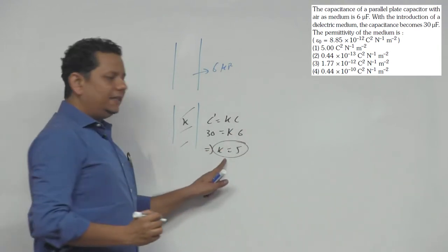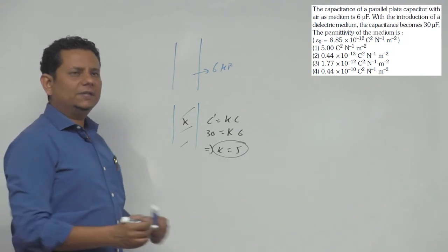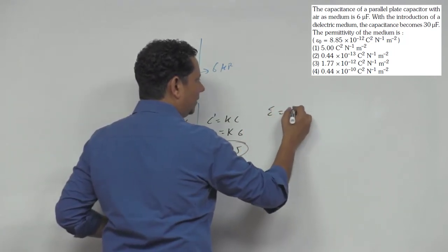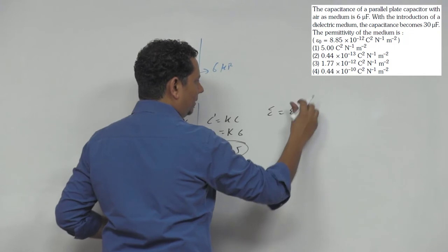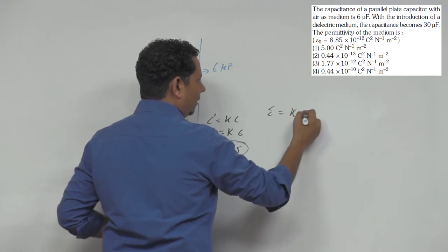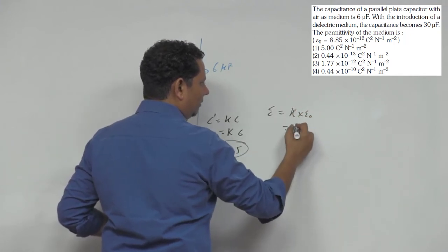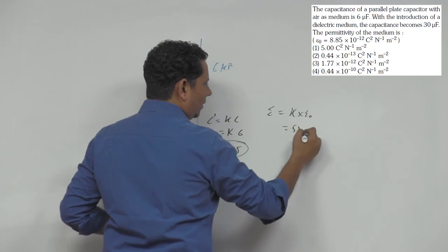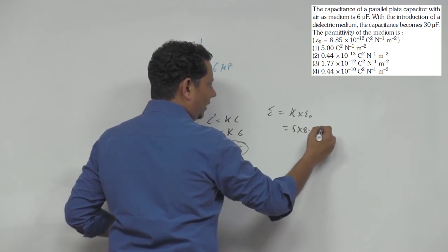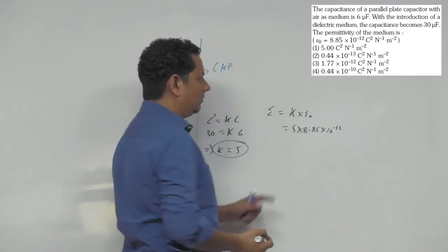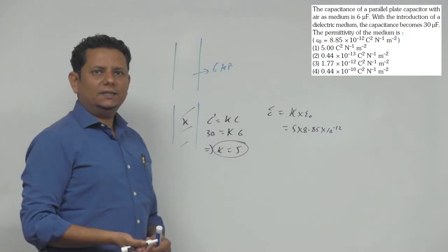Now यहां आपकी relative permittivity है, लेकिन यहां पर हमसे absolute पूछी है. So आपकी absolute permittivity will be equal to relative permittivity, इसको k लिख लेते हैं, multiplied by epsilon naught. So this will be 5 multiplied by 8.85 into 10 to the power minus 12.